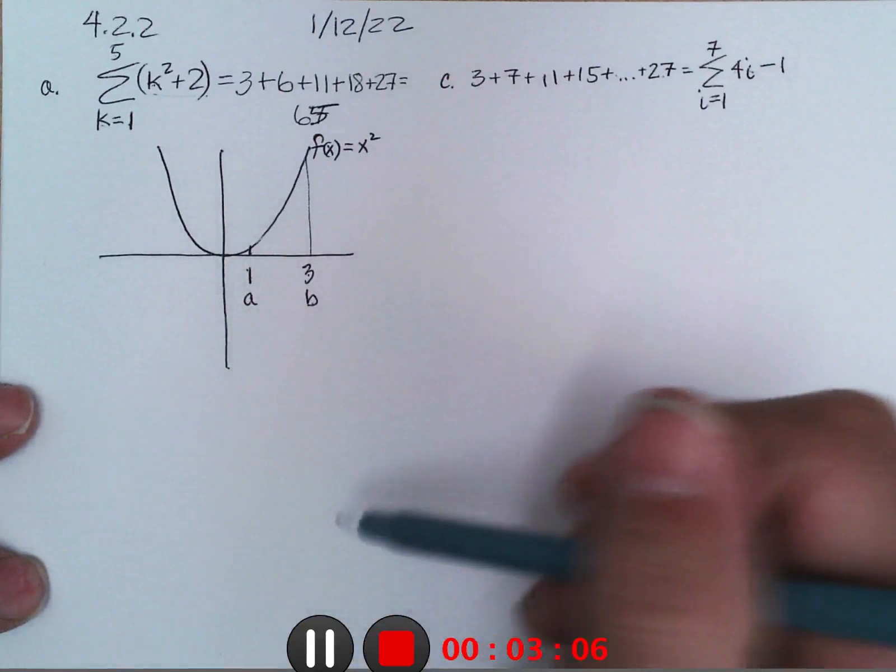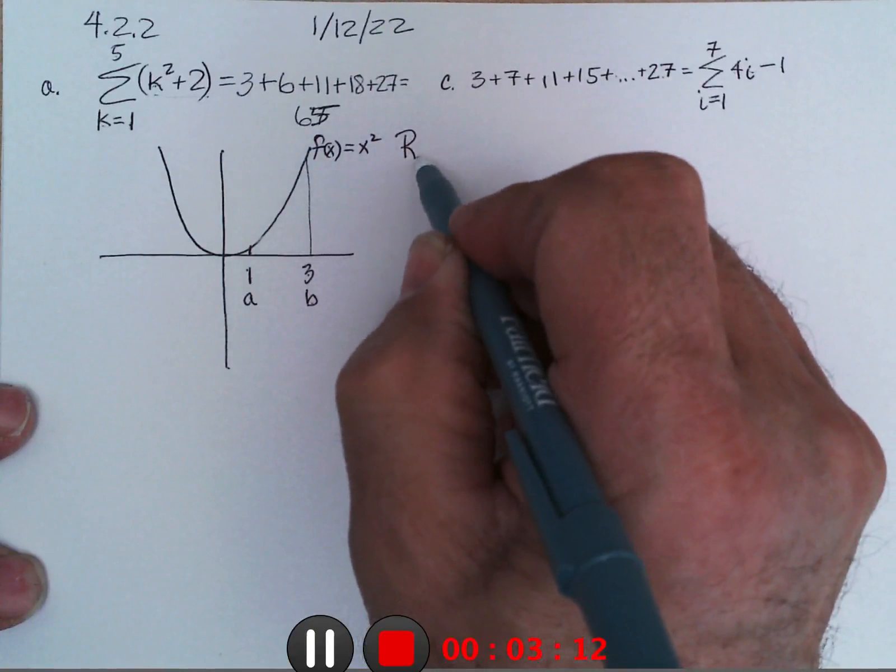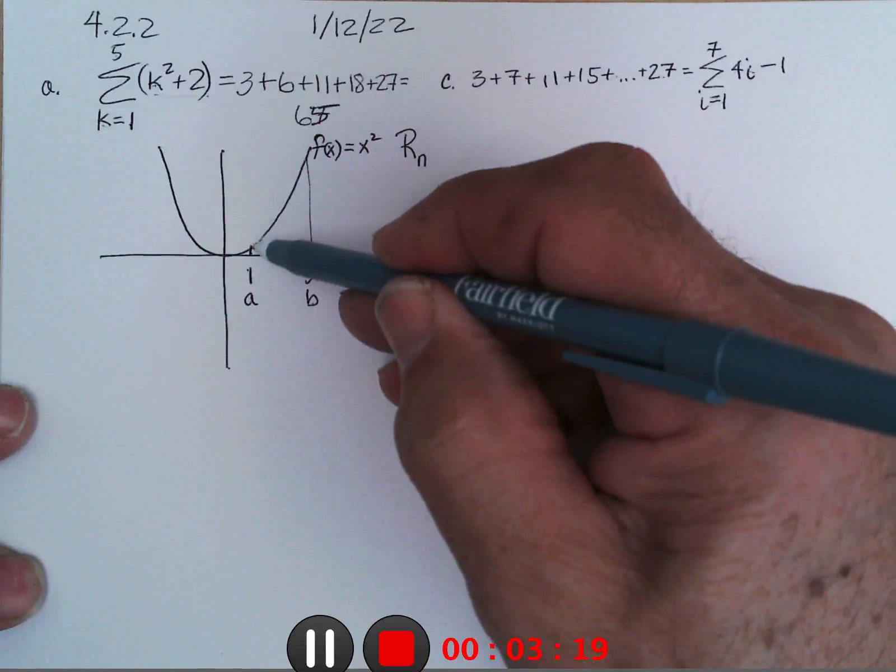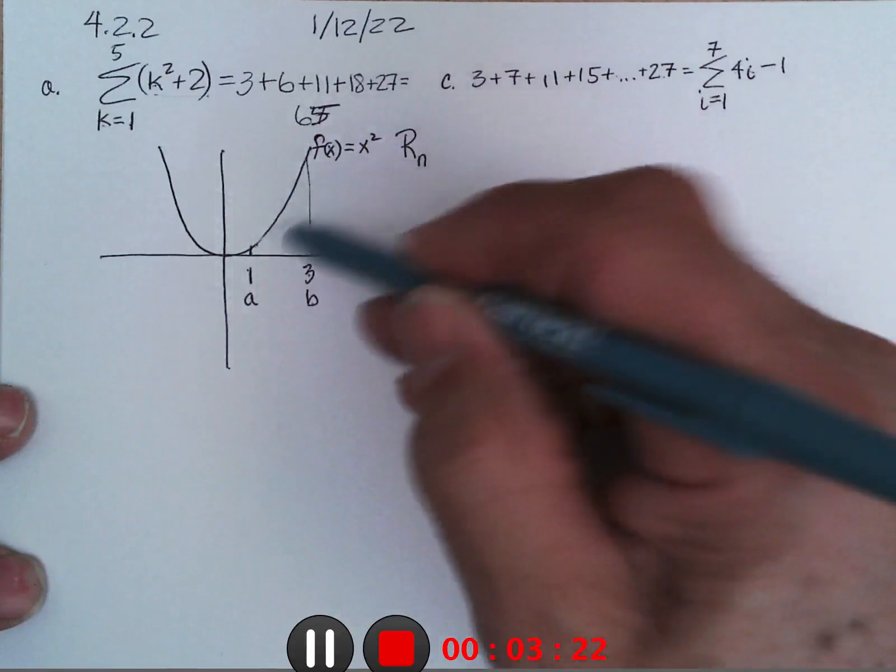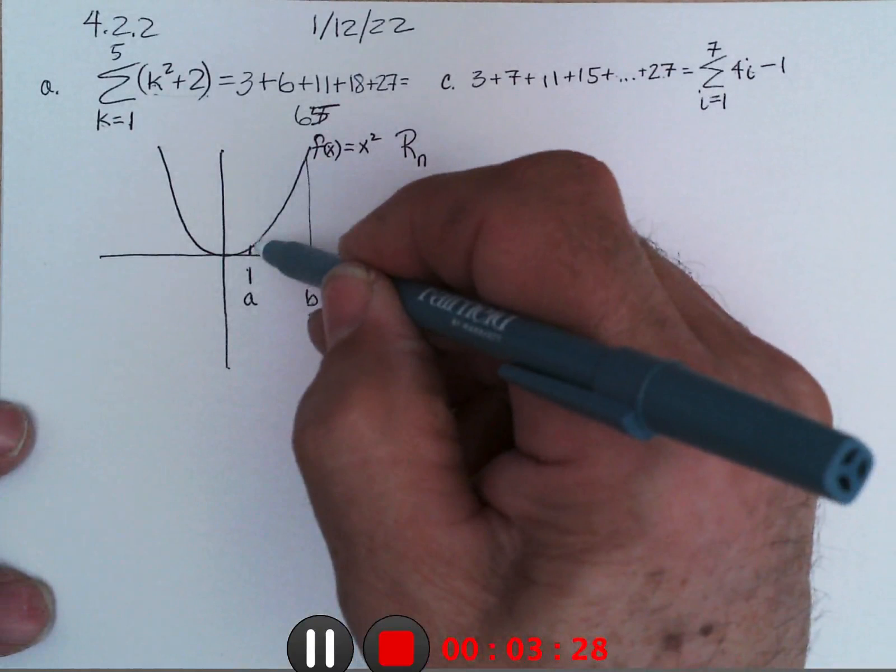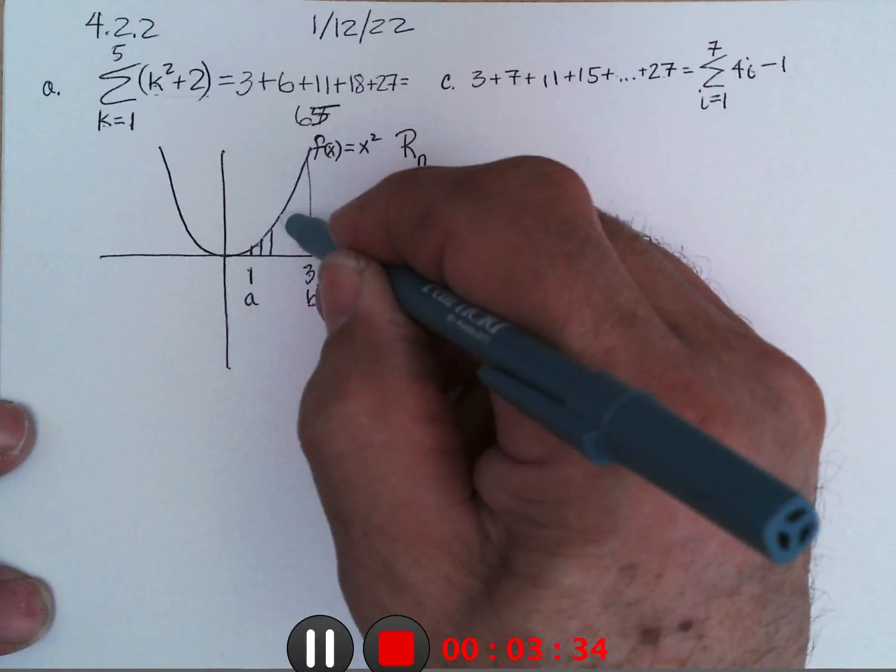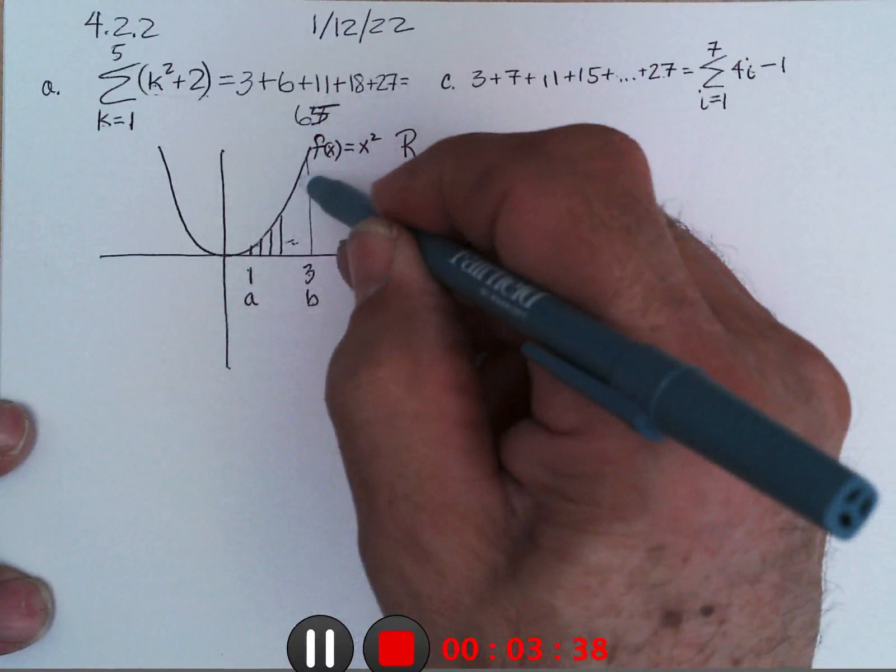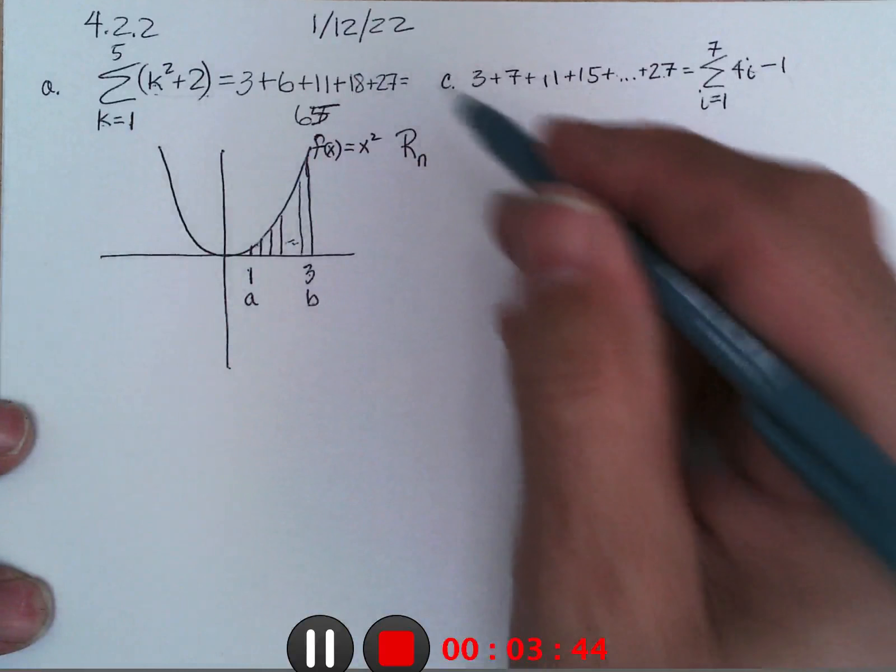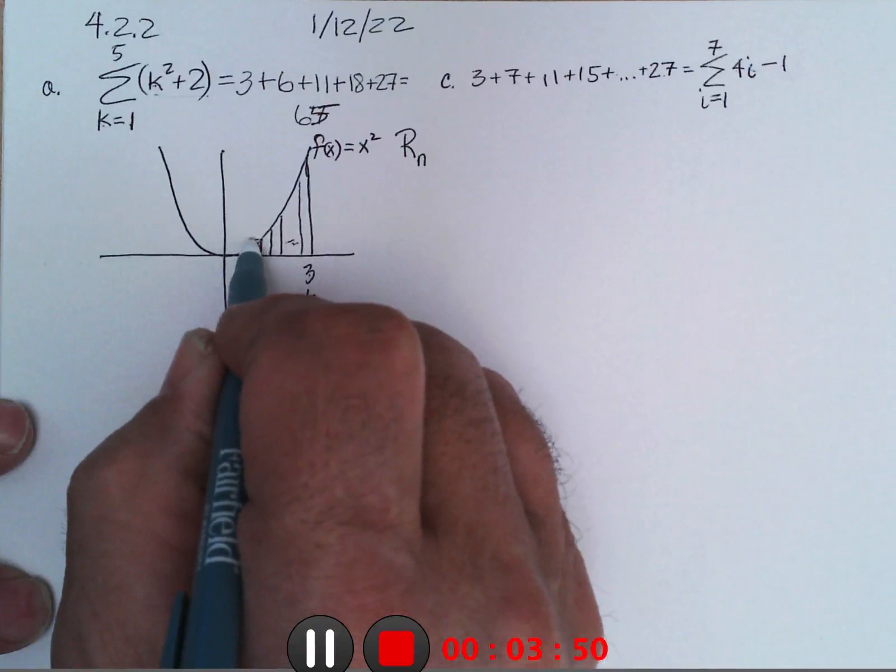So I'm going to do general notation and specific to this problem notation. Let's say we wanted to do a right-hand sum, that turns out to be kind of the easier one, and we want to split it n times. So if I'm going to split this n times, if n's a small number like 2 there'd only be 2 rectangles, but if n is 10 there'd be 10 of them. So they're going to be skinnier.